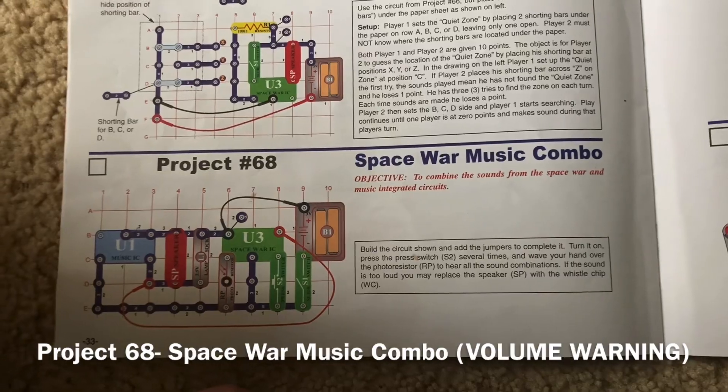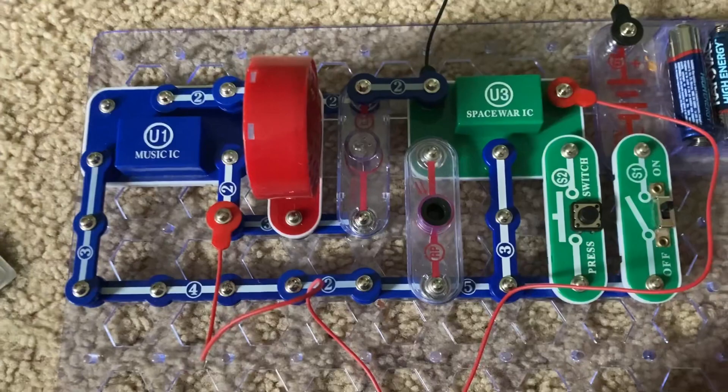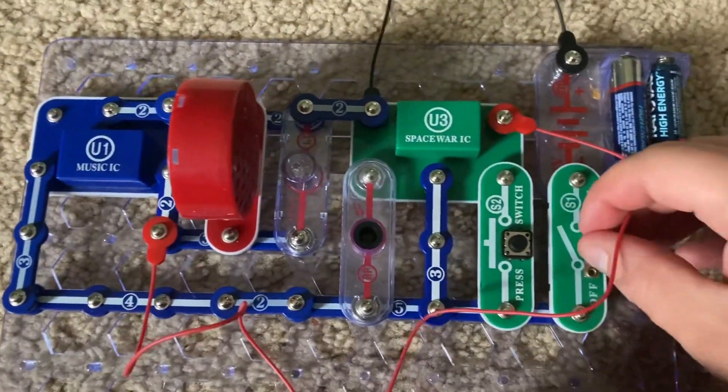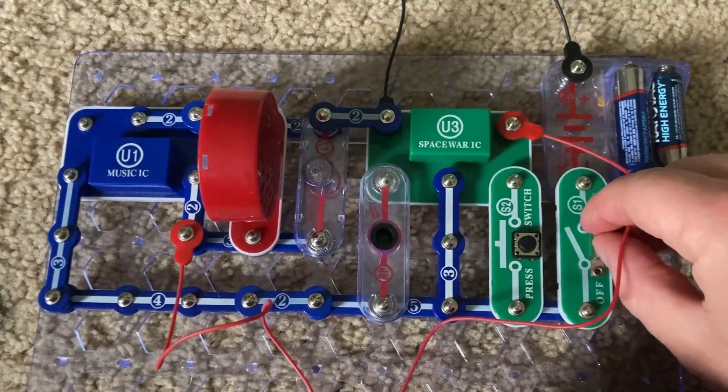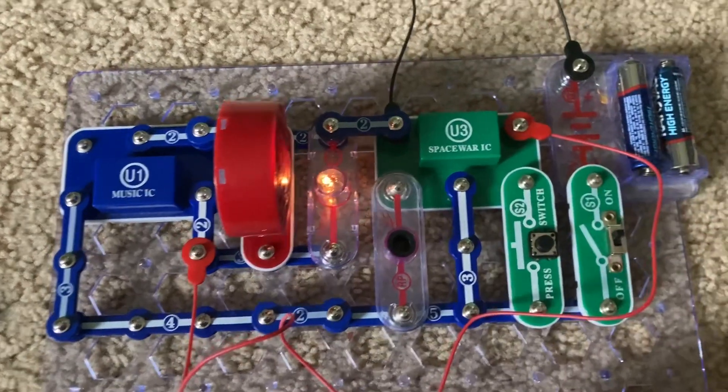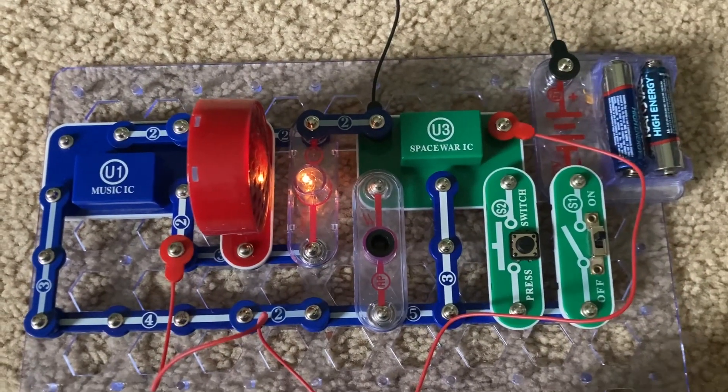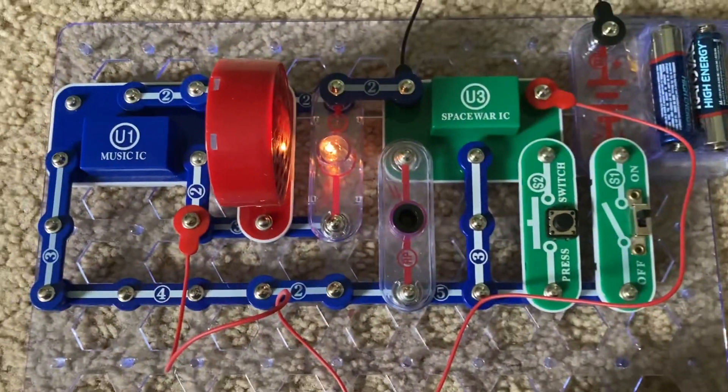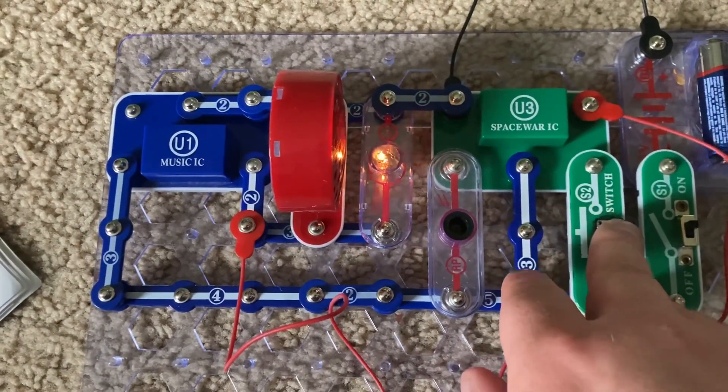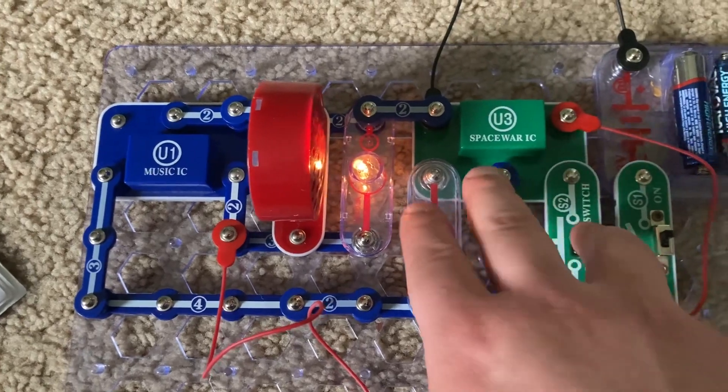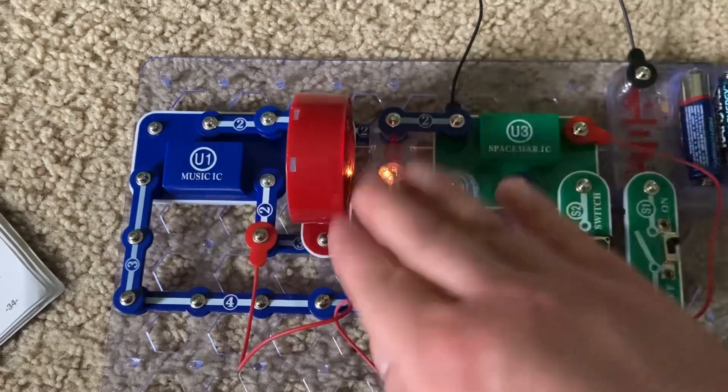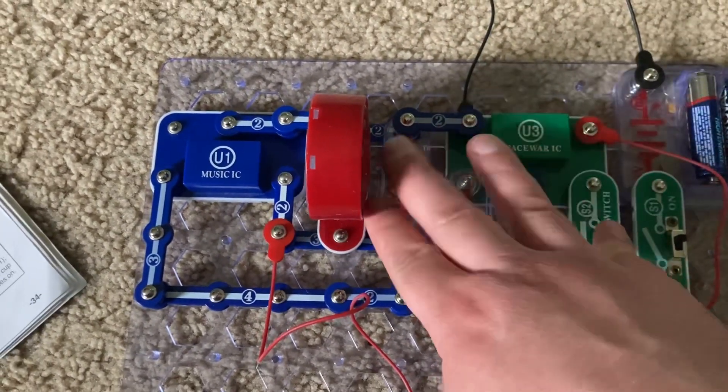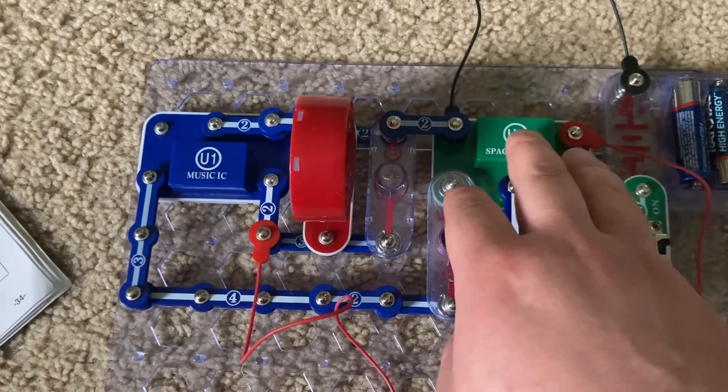Project 68 is Space War music combo. This circuit uses both the music and Space War integrated circuits. When I turn on the slide switch, you will hear distorted music playing and the L1 lamp lights up. And then by pushing the press switch and waving your hand over the photoresistor, you can hear sounds from the Space War integrated circuit.